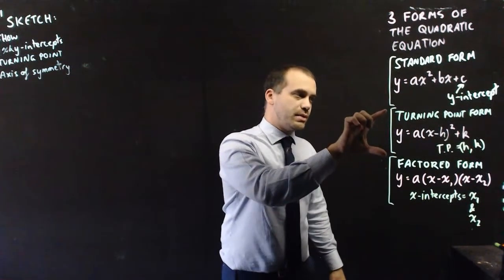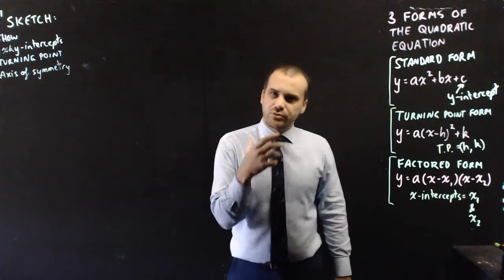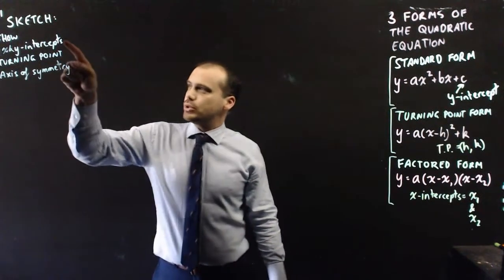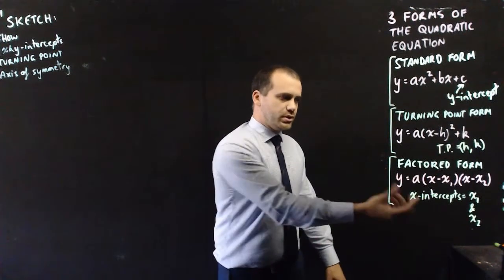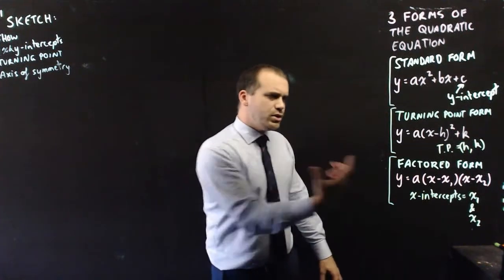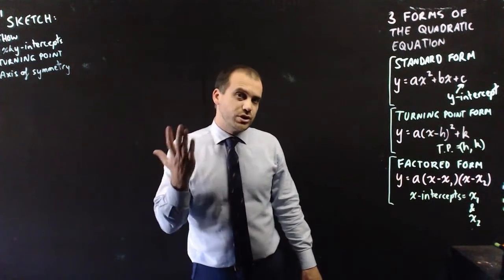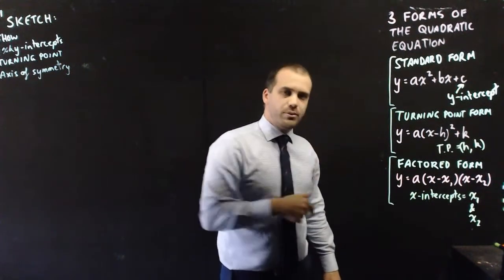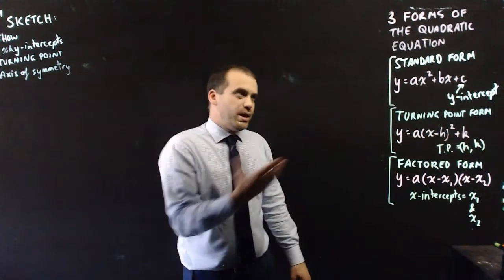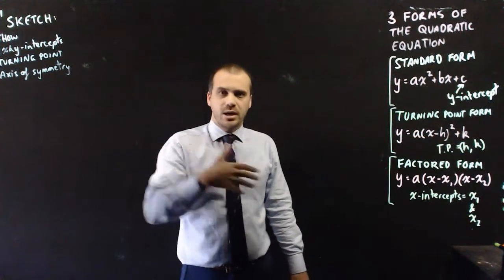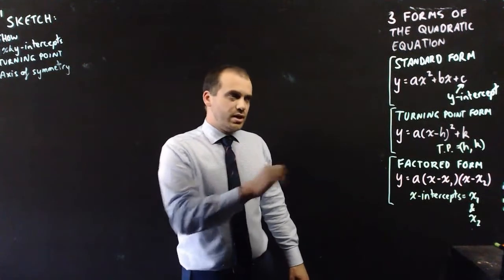I could spend time showing you how to sketch something from turning point form or factored form, but really you're just looking for this information. If you're given something in factored form, pull the x-intercepts from factored form, then expand it, put it into standard form, and find the other stuff you want to know. If you've got something in turning point form, find the turning point, then expand it and treat it as standard form. There are other small shortcuts when sketching, but you can't really go too far wrong as long as you know what you're looking for.